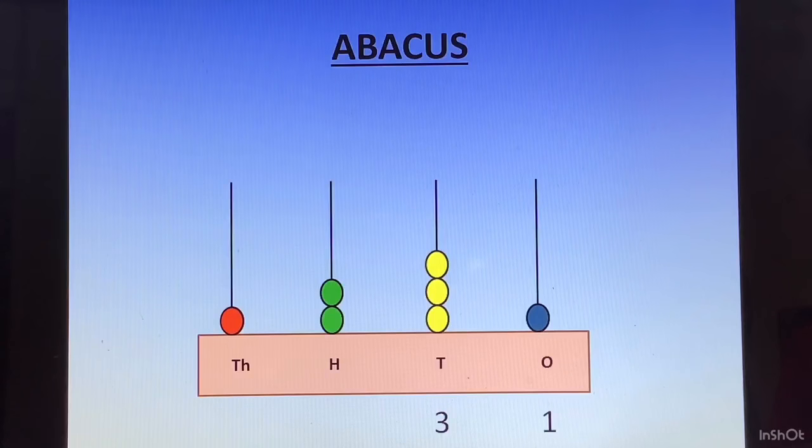In the hundreds spike we have 2 beads. So we will write 2 in the hundreds place. In the last spike we have 1 bead. So the digit in the thousands place is going to be 1. Thus our number form is 1231.